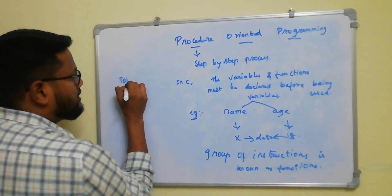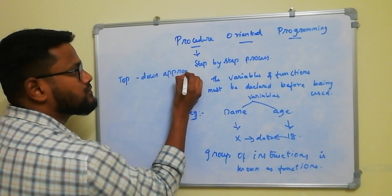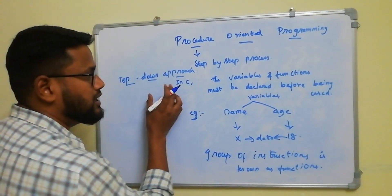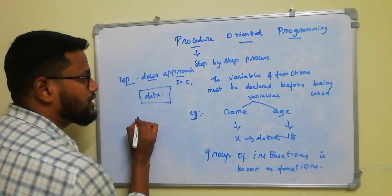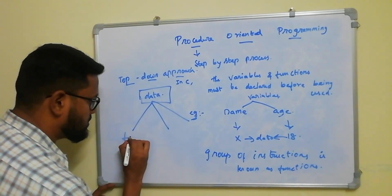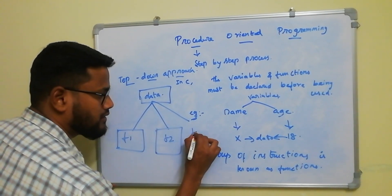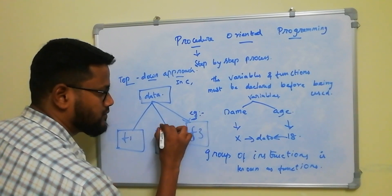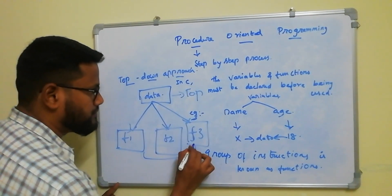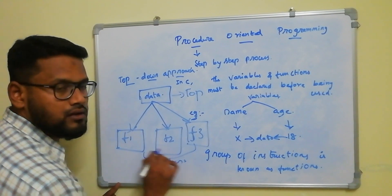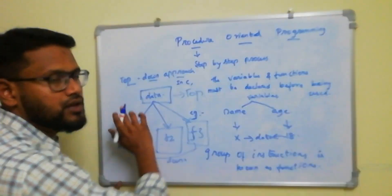Procedural oriented is a top-down approach. What is meant by top-down approach? We can control the number of functions. The topmost data is on the top and functions are below. Data is on the functions, and number of functions are useful below. This is procedural oriented programming.